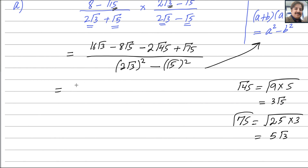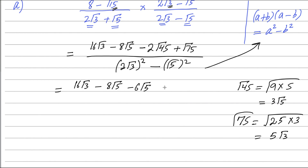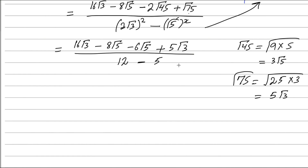Now simplifying the numerator: it becomes 16 square root 3 minus 8 square root 5 minus 2 times 3 square root 5, which gives negative 6 square root 5. Then 75 can be written as 5 square root 3. In the denominator, 2 squared is 4 and the square root cancels with the square, leaving 3; so 3 multiplied by 4 is 12, minus 5, as that square root is cancelled out.